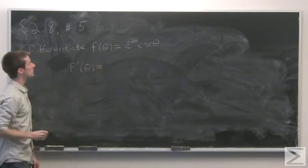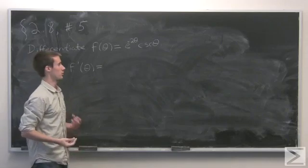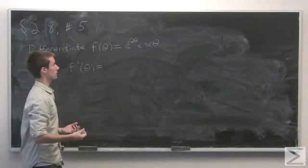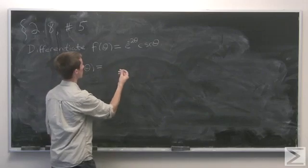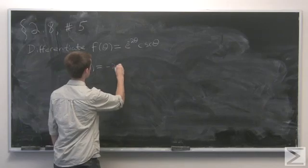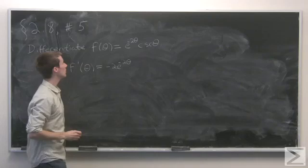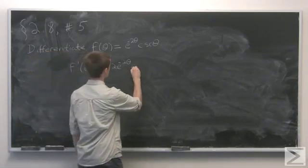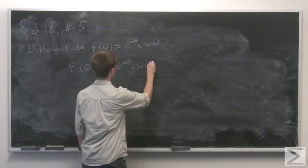F prime of theta is going to be the derivative of the first part of the product. So the derivative of e to the minus 2 theta will be minus 2 e to the minus 2 theta, using the chain rule, times the second part of the product, leaving it alone.